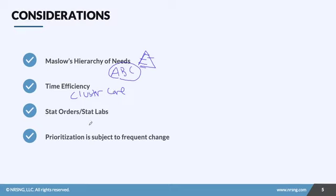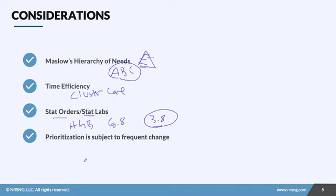Take care of your stat orders and stat labs, and follow institutional policies on those to ensure you're doing them according to your healthcare facility. Recognize the impact these orders and labs have on your patient. For example, if one patient has a hemoglobin of 6.8 and another has a hemoglobin of 3.8, both are critical labs — but the patient with 3.8 is far more urgent and emergent. Deal with the more important, more urgent values first.